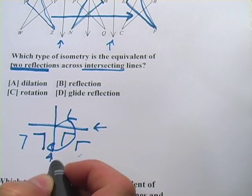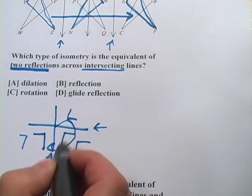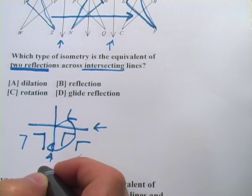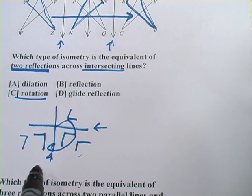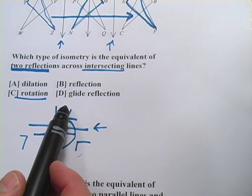So rotating something across, or reflecting something across intersecting lines, ends up being the same thing as a rotation. Another way, if that didn't seem intuitive to you, another way to get towards that is by process of elimination here.